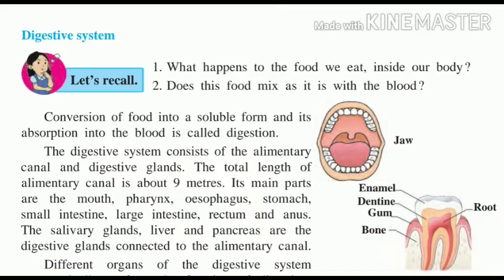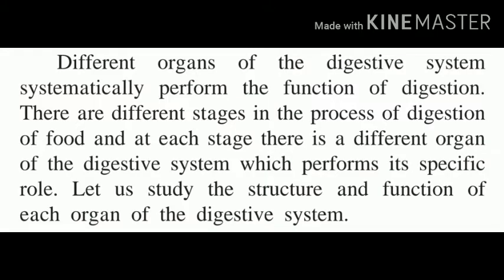The digestive glands play an important role by which the food gets digested. Once the food enters into the mouth, we chew it with the help of the teeth. Inside the mouth we have the upper jaw and the lower jaw. The food is bitten with the help of the teeth and crushed with the help of the molars and premolars. Once the food is mixed with the saliva, it forms a bolus and then enters into the Alimentary Canal through the mouth. The mouth is also known as the oral cavity.